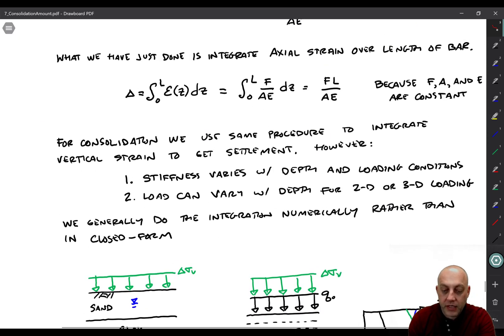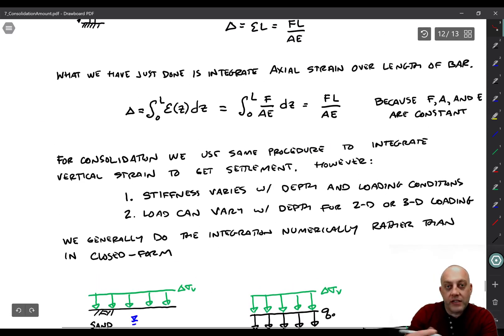So then the other thing is that the vertical stress change can actually vary with depth, too, for two-dimensional or three-dimensional loading. If you have a finite surface load acting over an infinite area, the stresses attenuate with depth. In this class, we'll deal with one-dimensional loading, so vertical stress change stays the same throughout the layer for the problems we'll solve.